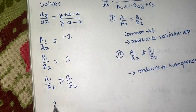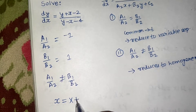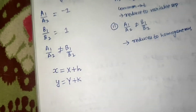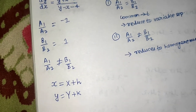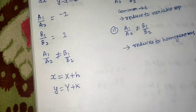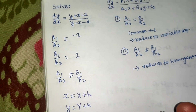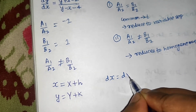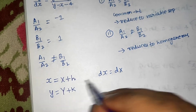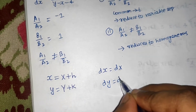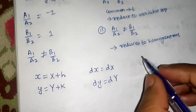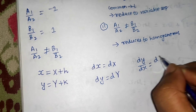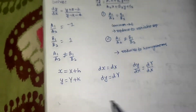In category 2, the first step is to substitute x = X + h and y = Y + k. Since we're shifting from x to capital X, we change everything in those terms. Differentiating gives dx = dX (since derivative of h is 0) and similarly dy = dY. Taking the ratio, dy/dx = dY/dX.